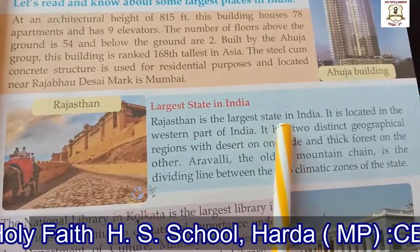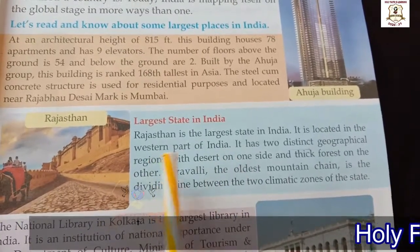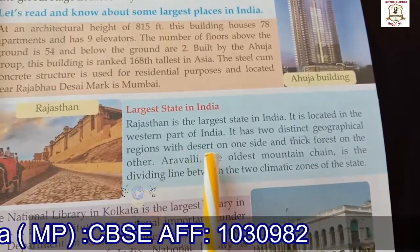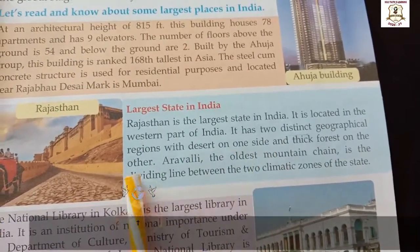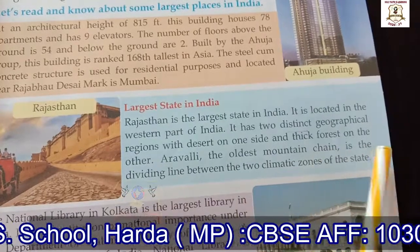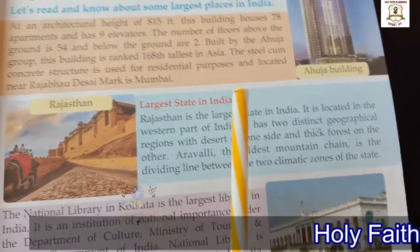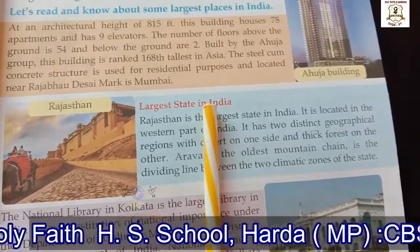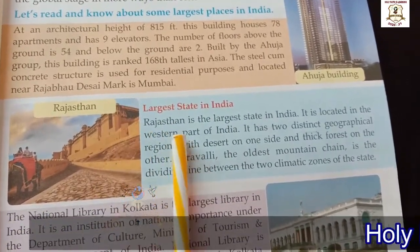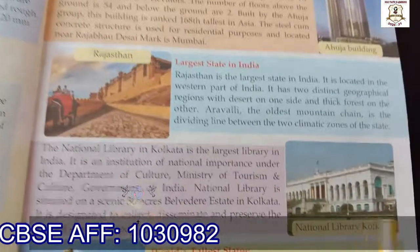Rajasthan is the largest state in India. It is located in the western part of India. It has two distinct geographical regions — desert on one side and thick forest on the other side. The Aravalli, the oldest mountain chain, is the dividing line between the two climatic zones of the state — one is desert and the second is thick forest.